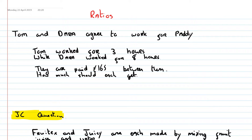With that in mind, let's have a look at this question. Tom and Dara agree to work for Paddy. Tom worked for three hours, while Dara worked for eight hours. They are paid 165 euros between them. How much should they get? So really what I want to do is divide this amount of money into the ratio 3 to 8. The reason is that Tom should get three hours worth of pay and Dara should get eight hours worth. So there's my ratio, 3 to 8.